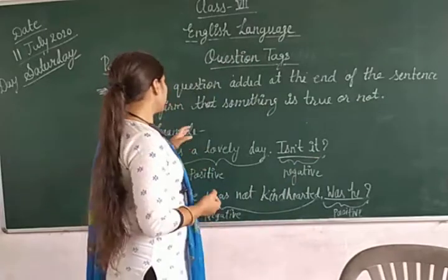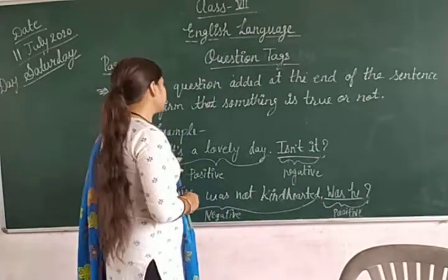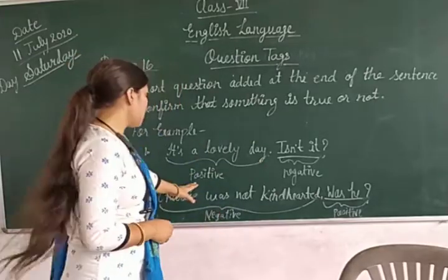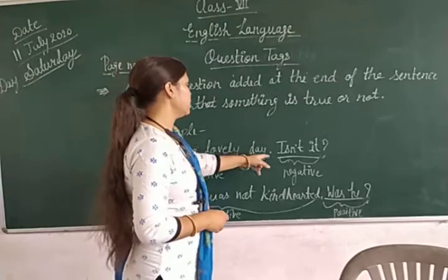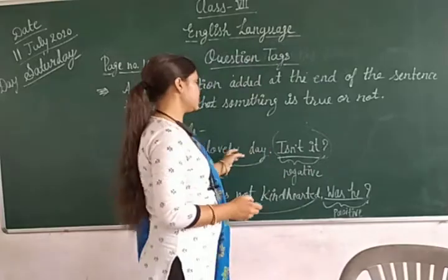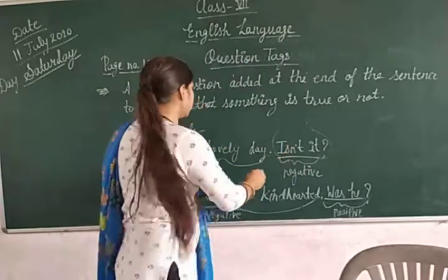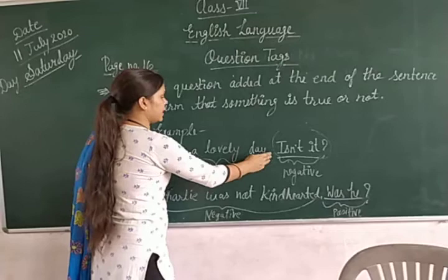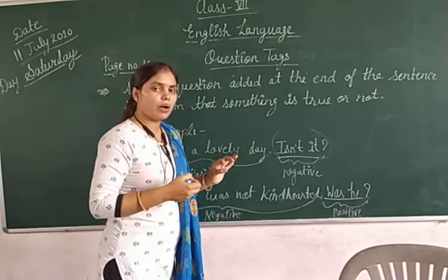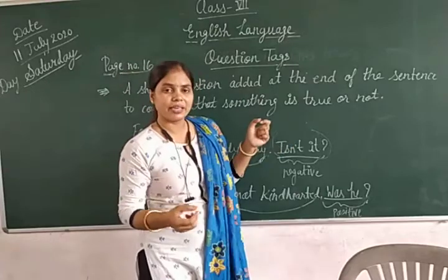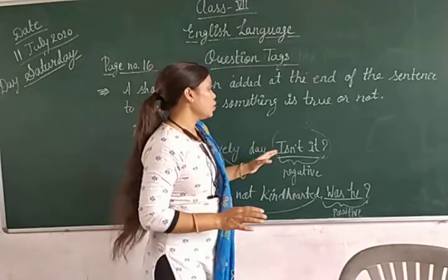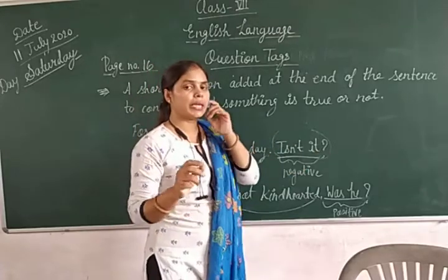I want to give you some examples. The first example is: 'It's a lovely day.' That's a positive statement, and 'isn't it' is the question tag. It's just a confirmation — it's a lovely day, a very good day, and then you add 'isn't it?' — you're asking a question to confirm.